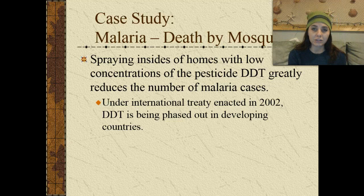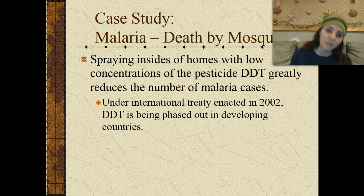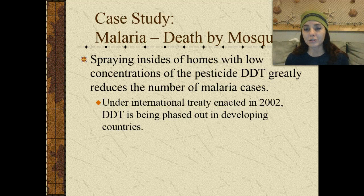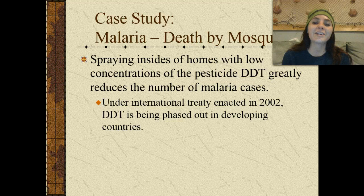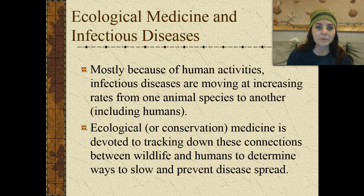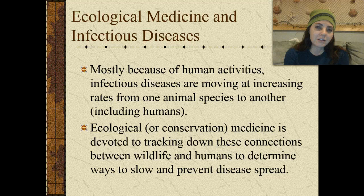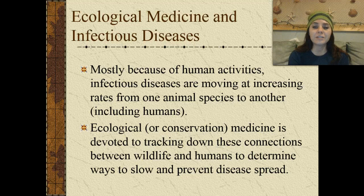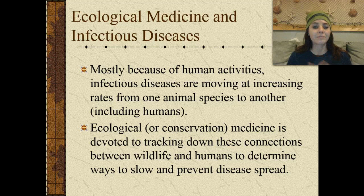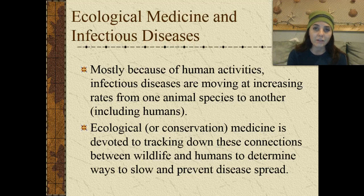Spraying the insides of homes with low concentrations of the pesticide DDT greatly reduces the number of malaria cases. However, DDT has been found to be very detrimental to the environment, so under an international treaty enacted in 2002, DDT is being phased out in developing countries. Ecological or conservation medicine is devoted to tracking down connections between wildlife and humans to determine ways to slow and prevent the spread of diseases, mostly driven by human activities.